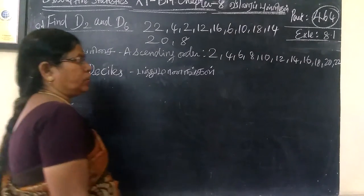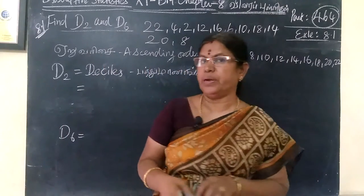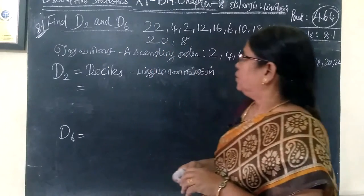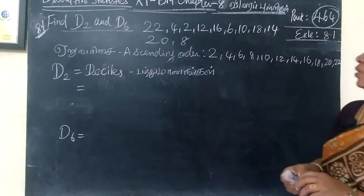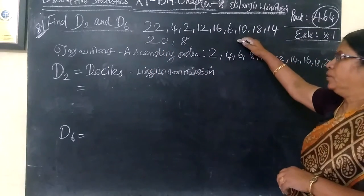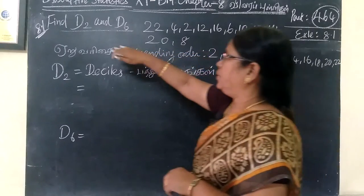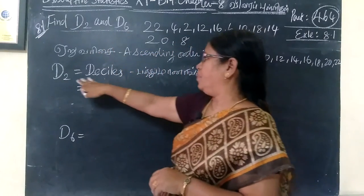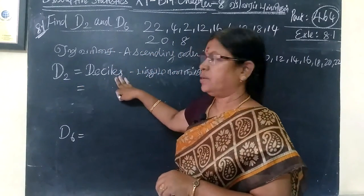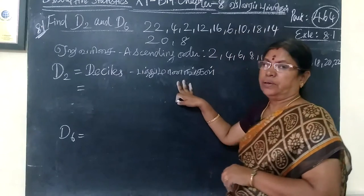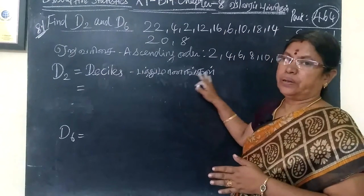So next, we will look at Example 8.1, first question. Here, you are given the data. In this case, we have D2 and D6. D means deciles. Deciles means that we are dividing into 10 equal parts. Find D2 and D6.